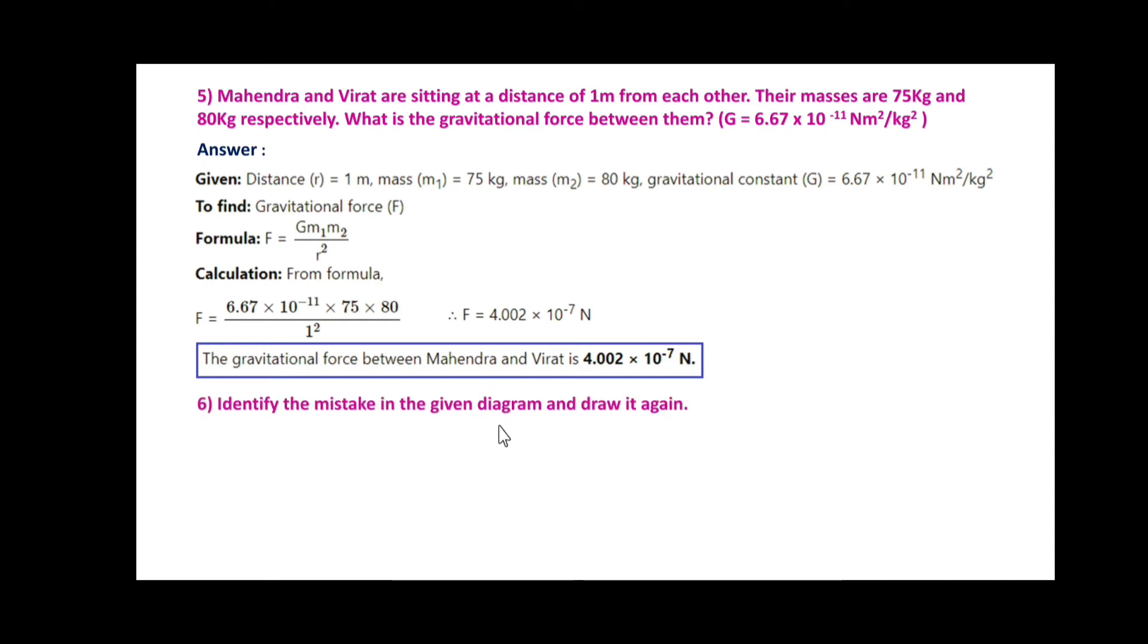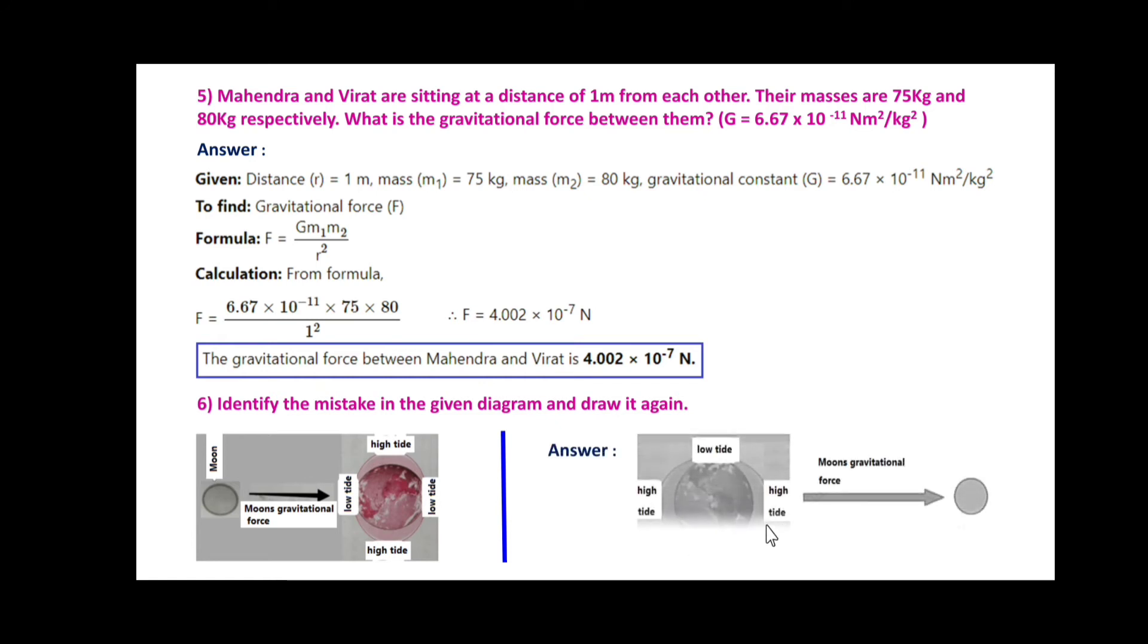Identify the mistake in the given diagram and draw it again. Here you can see the diagram. Earth is given, moon is there. Moon's gravitational force is towards Earth. Here low tide and high tide are shown. The diagram could be corrected in this way: the direction of moon's gravitational force is from Earth to Moon. So here low tide is in the vertical manner and high tide is in the horizontal way. This is the corrected figure.